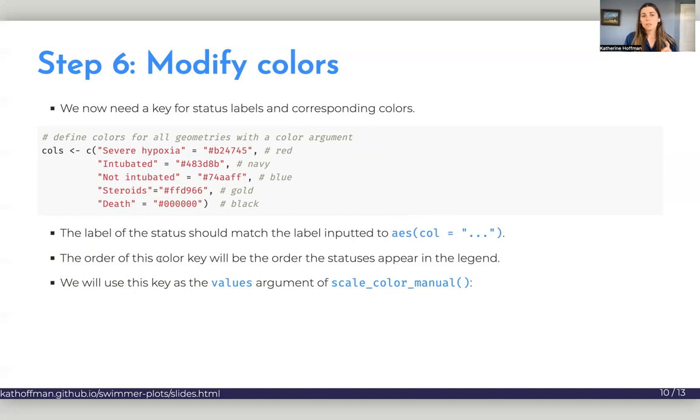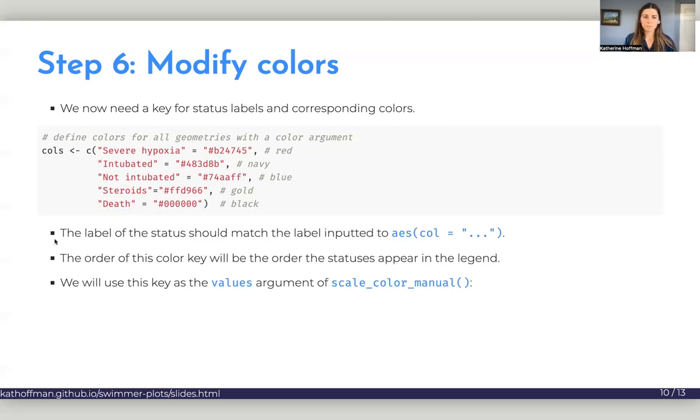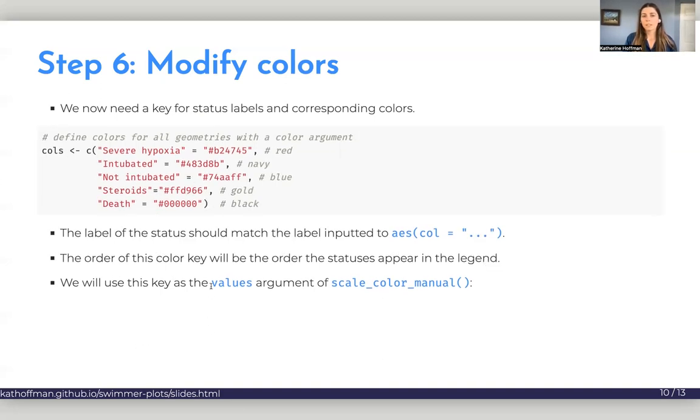And the order of this color key needs to be the same as the order the statuses appear in your legend, or as you want them to appear in your legend. So, as I said, I didn't want death to occur first in the legend, even though it's alphabetically first, so I put that last here. And we're going to put this calls key that we just made as the values argument of scale_color_manual. So let's do that now.